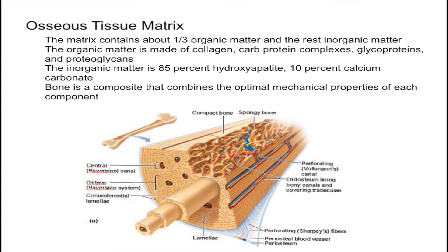The organic matter is also composed of proteoglycans and glycoproteins, so the organic matter is composed of a wide variety of things. On the other hand, you have inorganic matter, which makes up the vast majority of osseous tissue.